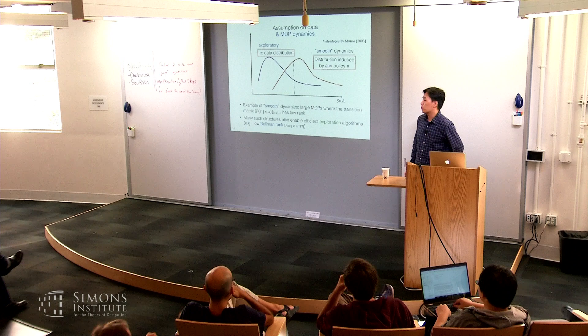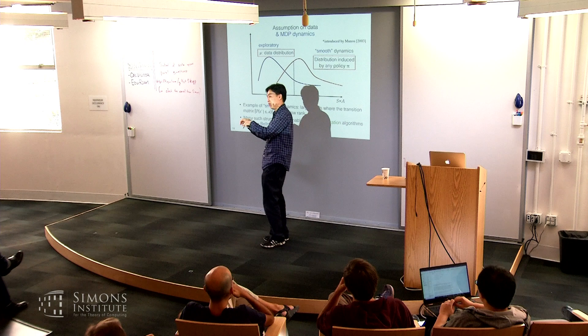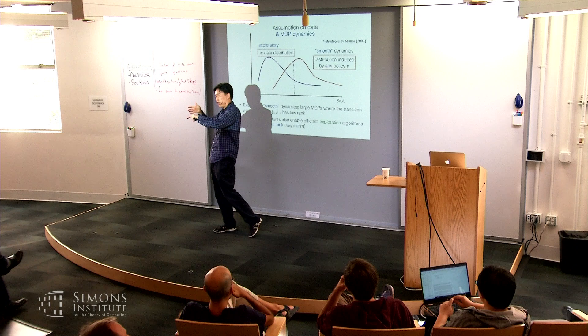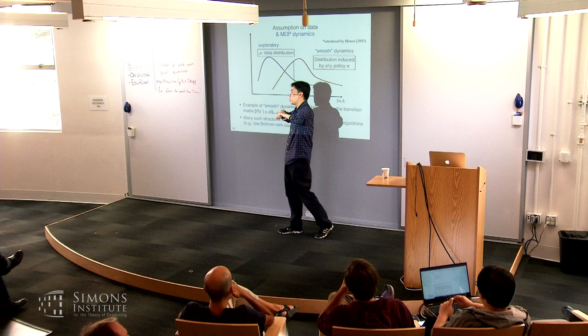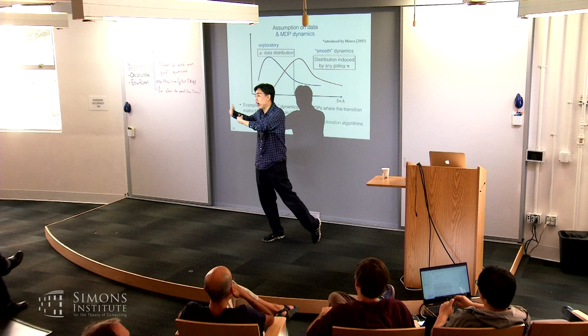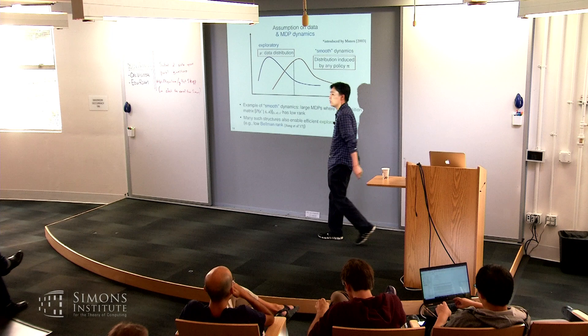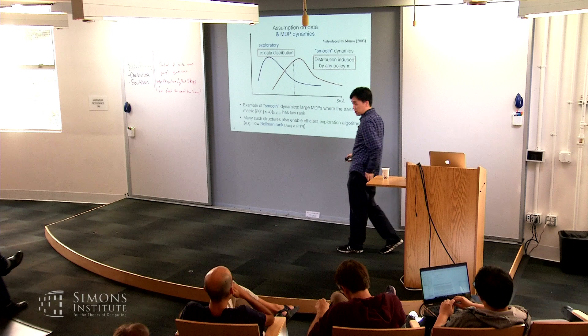An audience member asked what the low-rank assumption buys you. It ensures that when you do the transition from S,A to S', you go through a bottleneck — a hidden factor — and conditional on that hidden factor, the next state distribution is independent of all previous things. For any distribution naturally generated over the state-action space, you can always express it as the distribution over the hidden factors through an emission process. So C is essentially upper-bounded by the number of hidden factors or the rank.